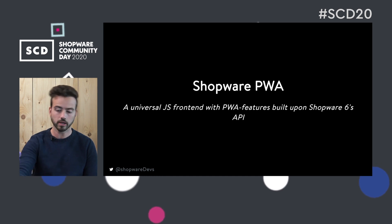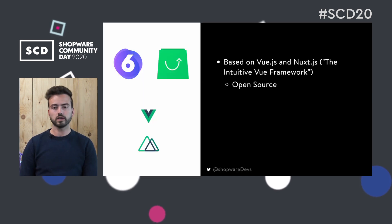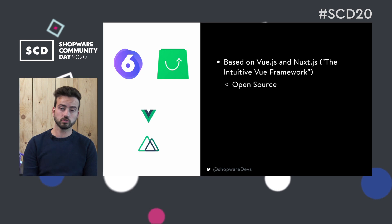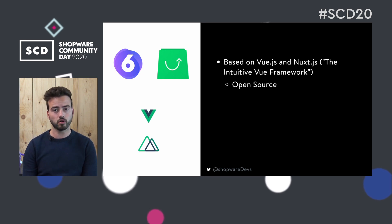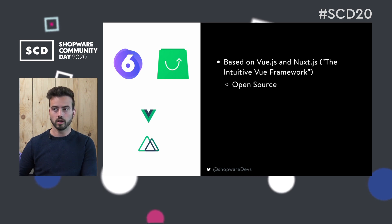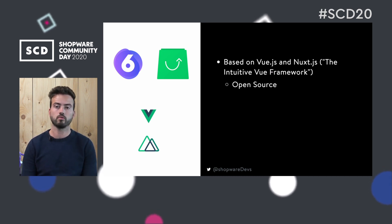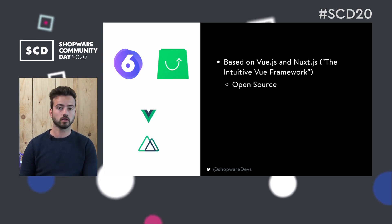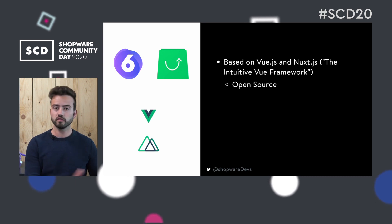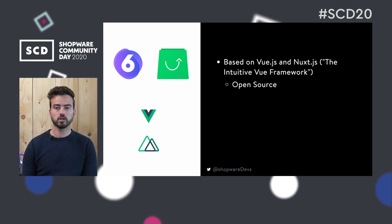Shopware PWA is an open source project. It is built upon Nuxt.js — the isomorphic JavaScript application framework, which they call the intuitive or progressive Vue framework. It comes with great features like code splitting and using the file system as an API to build your application and routes easily.